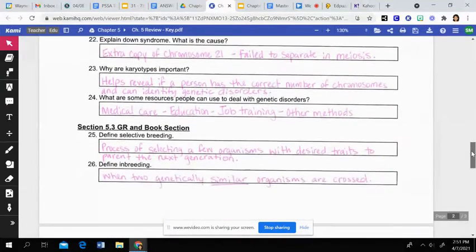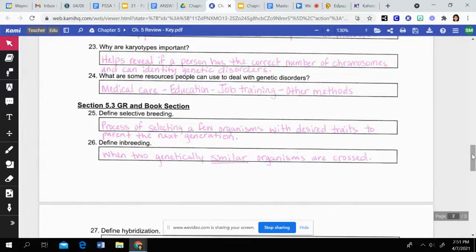Then karyotypes are important because it helps reveal if a person has the correct number of chromosomes. And it can also identify if there's genetic disorders based on that number of chromosomes or if there's abnormalities. Then some different resources that people can use or are helpful is different medical care. Either taking vitamins or getting certain medications and treatments. Being educated about their genetic disorder or educating the people around them. Specific job training to help them be more successful. And then there's even other methods such as counseling and things like that that can help people deal with their genetic disorder.